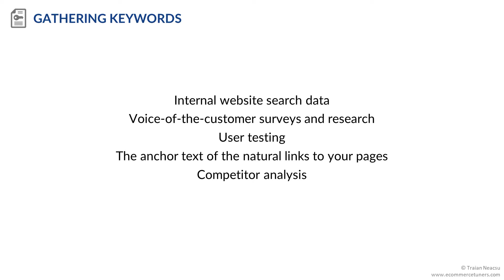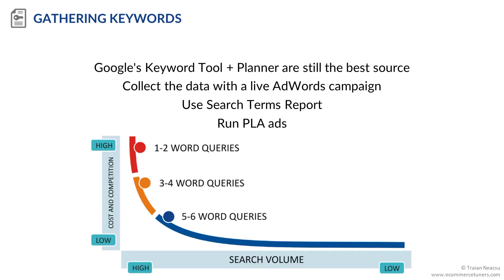Even though there is a plethora of keyword tools, arguably the largest set of keywords and search queries and the most accurate search volumes can be extracted from pay-per-click advertising platforms such as AdWords. A live campaign can generate a very useful list of long-tail keywords, and in my experience, that list is impossible to capture with any other tool. You should run product listing ads and dynamic search ads and use the search query report to get an amazing number of relevant keywords.